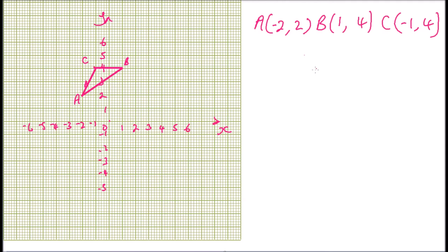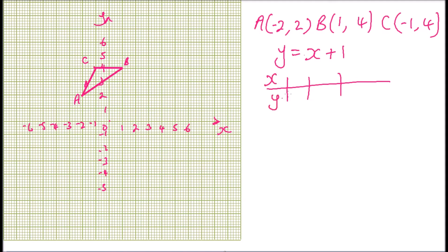We are told the line is y = x + 1, so we need to plot this line in order to reflect our triangle. We find points on the line — when x = 0, y = 1; when x = 1, y = 2; when x = 2, y = 3 — and we join the points to draw the line y = x + 1.